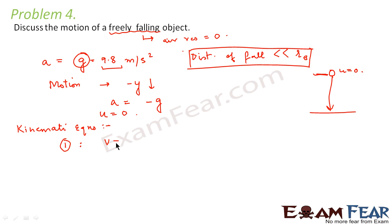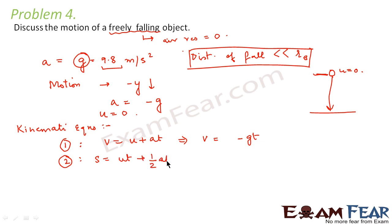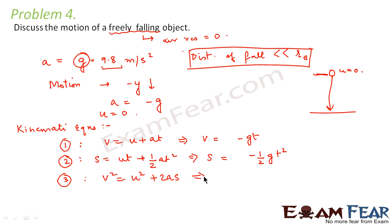Taking these values, we can write the kinematic equations. Equation 1: v = u + at becomes v = −gt. Equation 2: s = ut + ½at² becomes s = −½gt². Equation 3: v² = u² + 2as becomes v² = −2gy, where y is the displacement or the height from where the object falls to the ground. So these are the three equations of motion for a freely falling object.